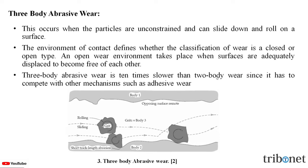Three-body abrasive wear is 10 times slower than two-body abrasive wear, since it has to compete with other mechanisms such as adhesive wear. In this figure, we can see the three-body abrasive wear where body 1 and body 2 are separated by a distance, and body 3 is a grit which forms the wear by rolling and sliding action.